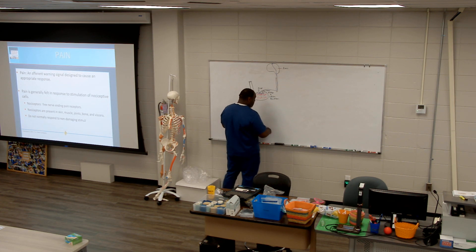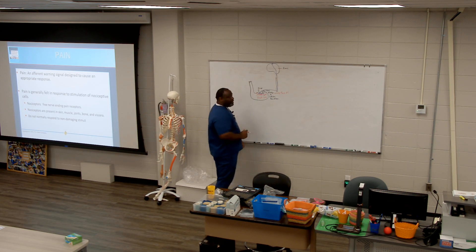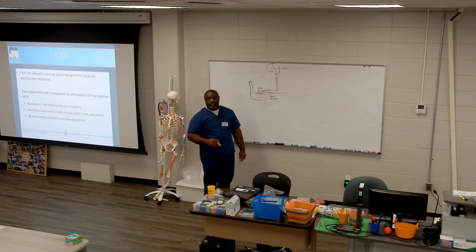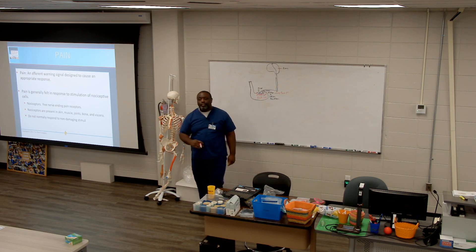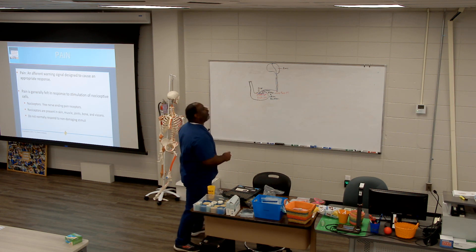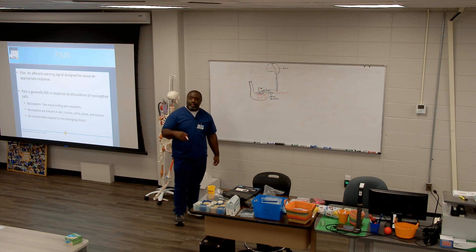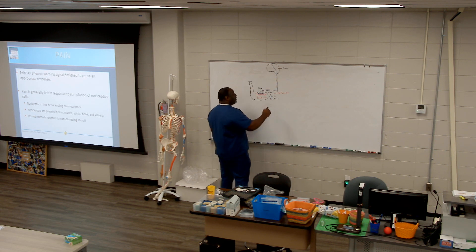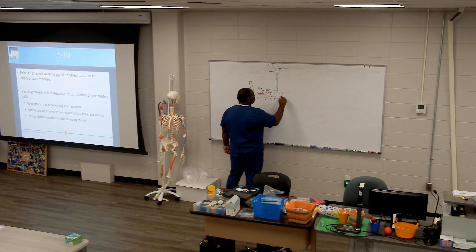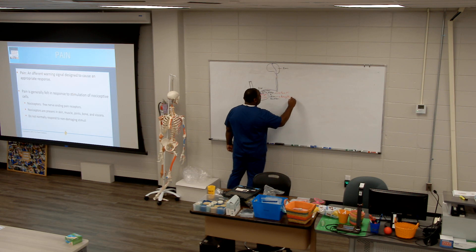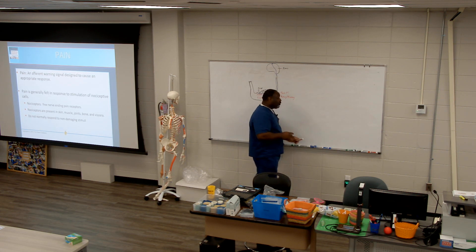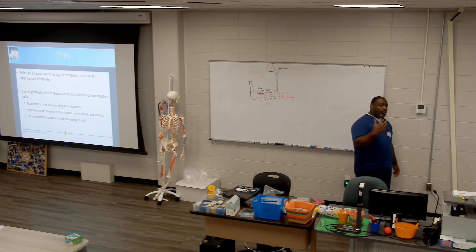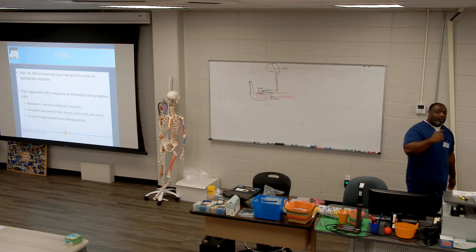A-delta communicates fast pain — like when you're not paying attention and slam your leg on something. Immediately you know you're hurting. A-delta does that. C-fiber handles aching, throbbing-type pain — what we call slow pain. It doesn't have to be dull, but aching, throbbing pain is communicated slowly via C-fiber. So nociceptors communicate information to different pain fibers, and those fibers carry it to the spinal cord, and then up to the brain.